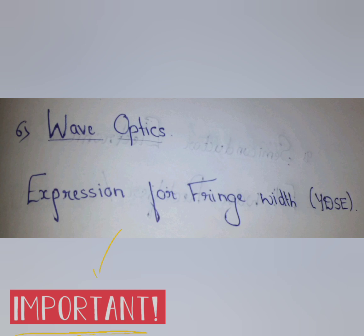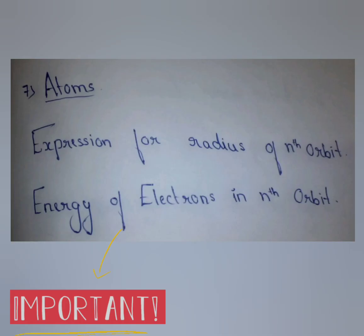From the sixth chapter, Wave Optics, the important question is: expression for fringe width in Young's double slit experiment. From the seventh chapter, the important questions are: expression for radius of the nth orbit, and energy of electrons in the nth orbit.